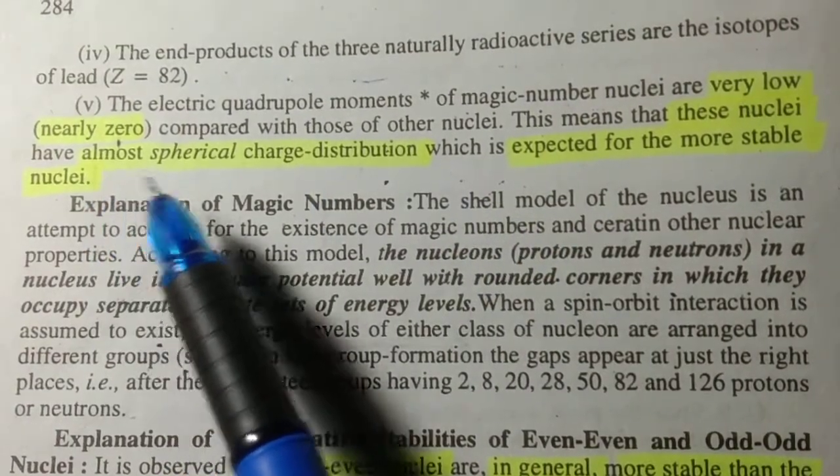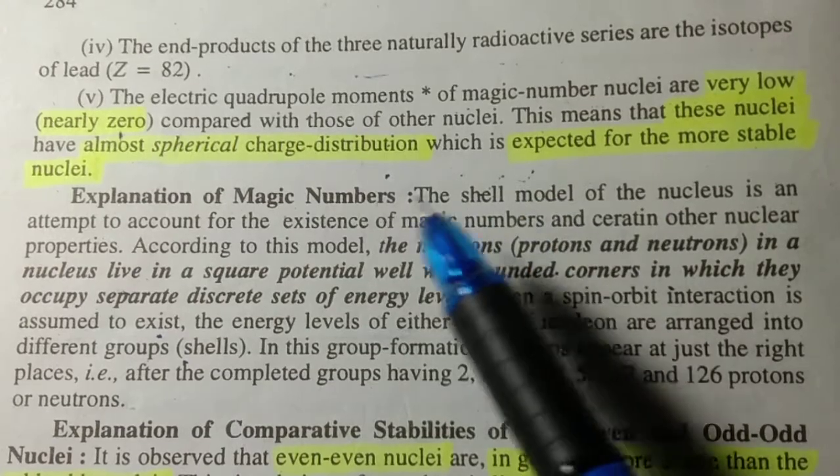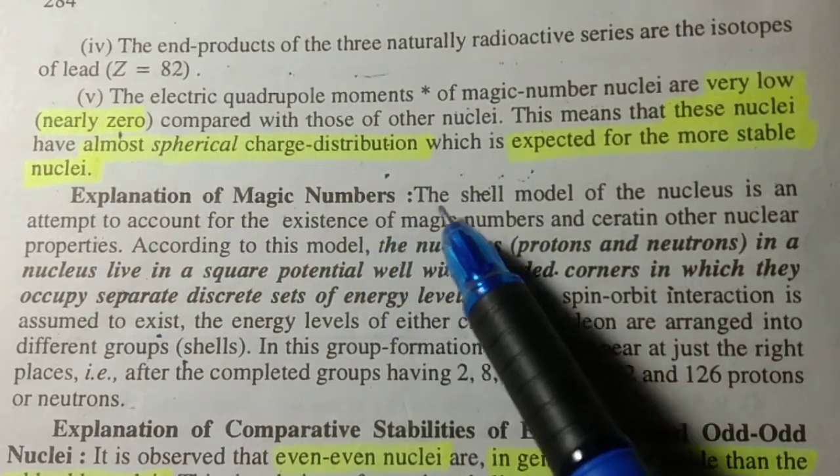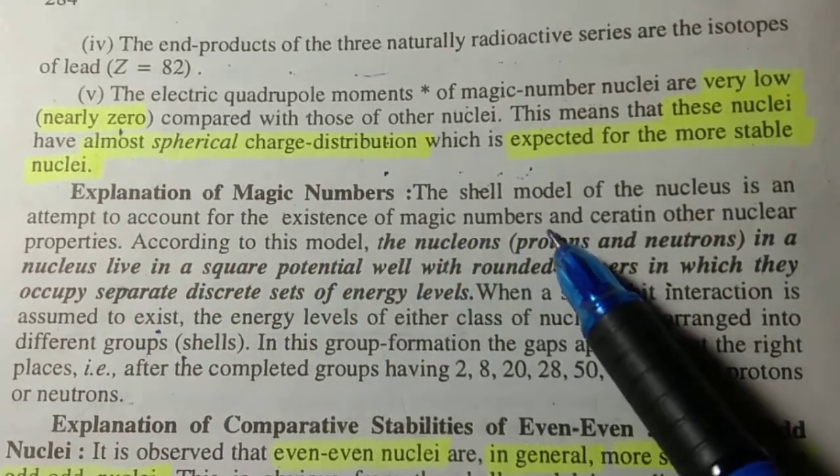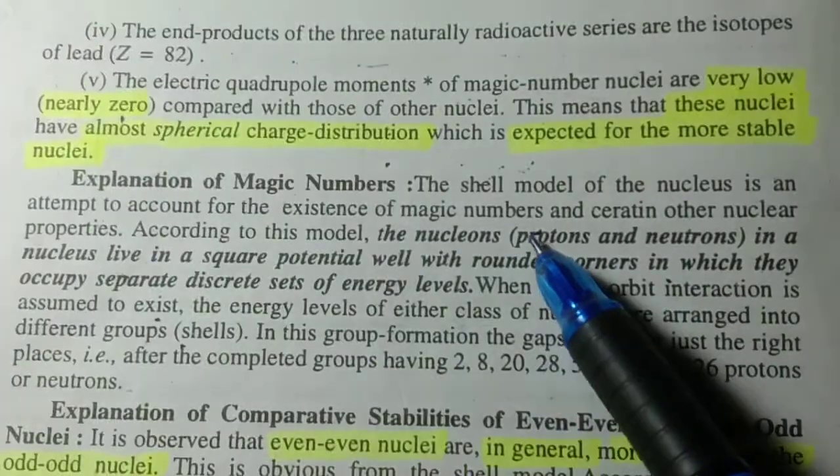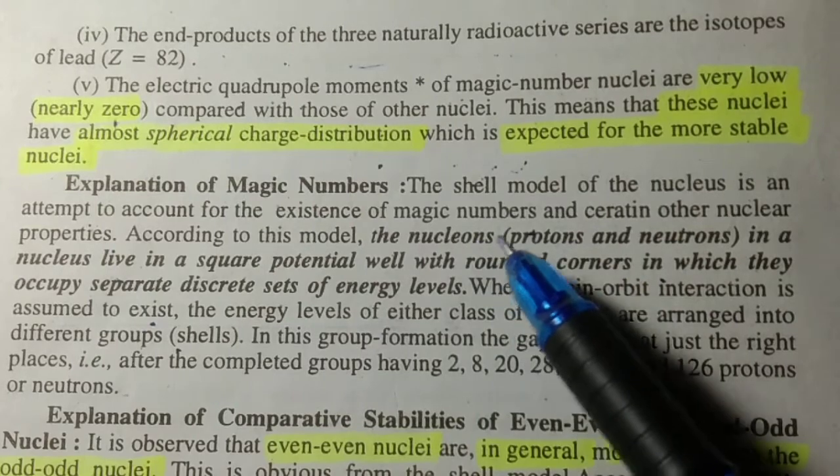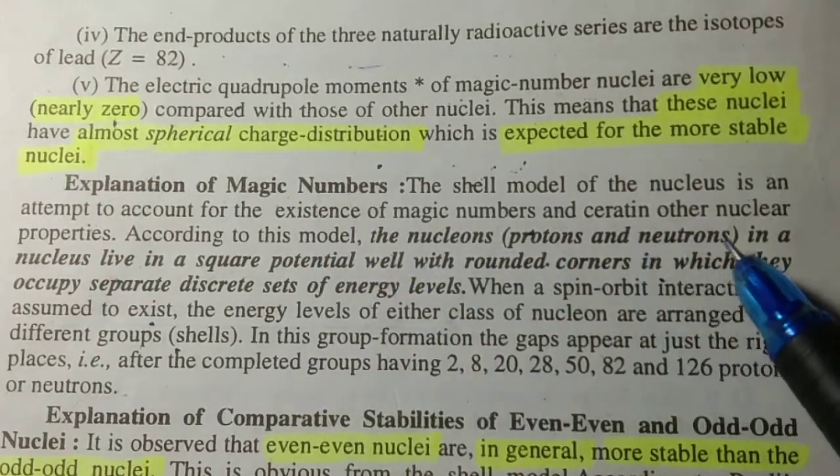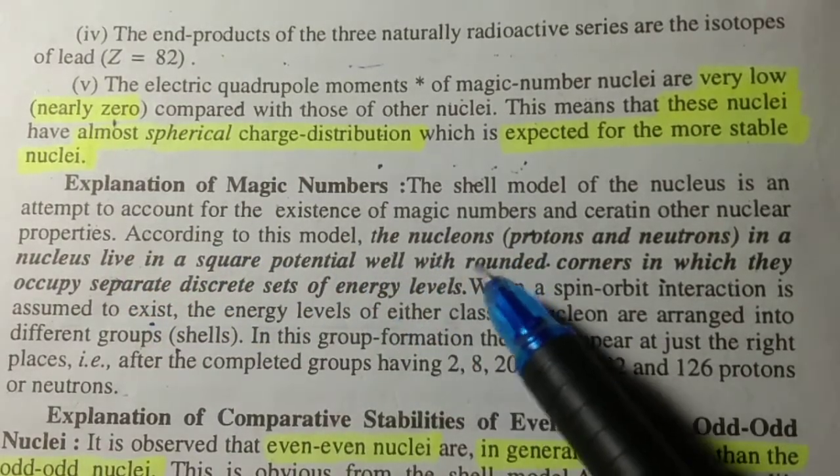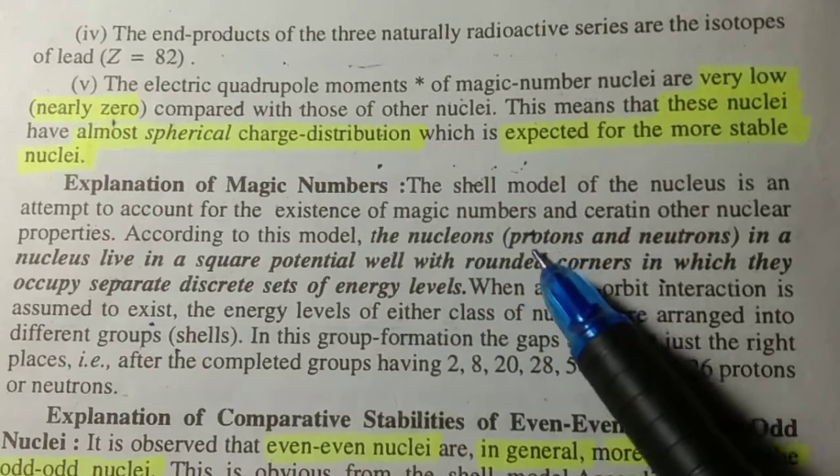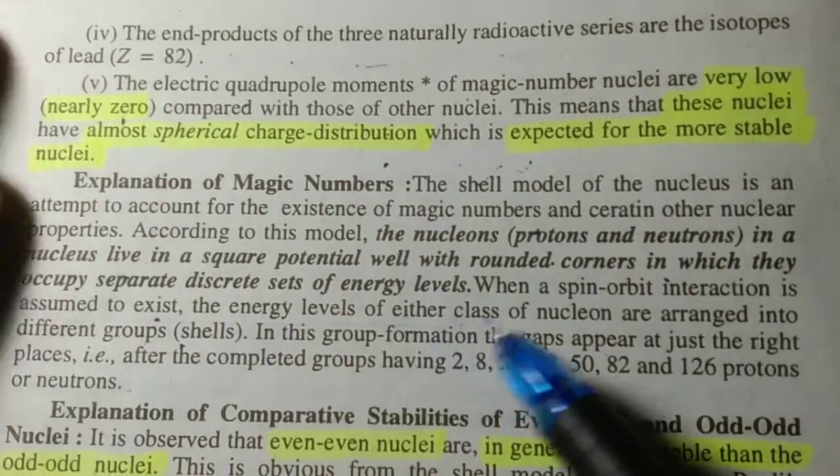Now, explanation of magic numbers. The shell model of the nucleus is an attempt to account for the existence of magic numbers and certain other nuclear properties. According to this model, the nucleons—that is, protons and neutrons—in a nucleus live in a square potential well with rounded corners in which they occupy separate discrete sets of energy levels.